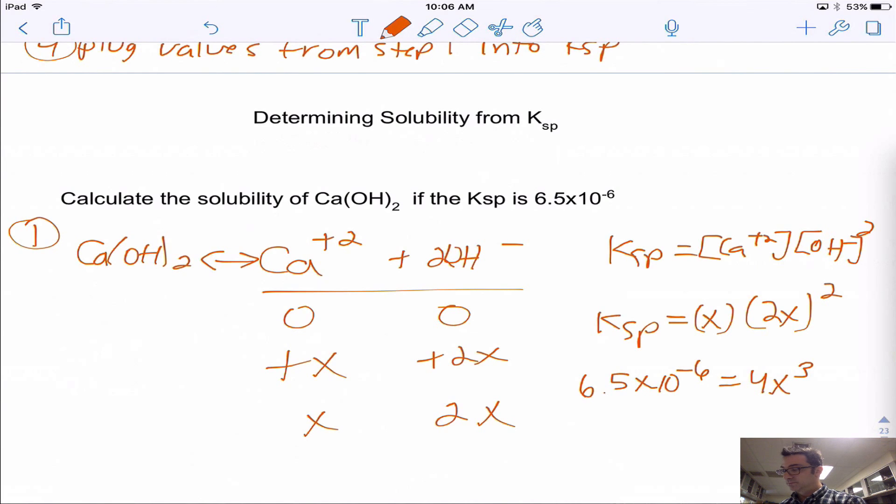Then we could raise that answer to the one-third power, or just take the cube root if you know how to do that in your calculator, and we'll get 0.025 molar. So X will be equal to 0.025 molar. Now it depends on what they're asking us for. If they want the concentration of just X, this is called the molar solubility. If they want the concentration of OH-, you'd have to times that by 2 and get 0.05 molar.